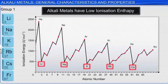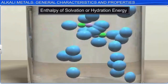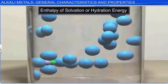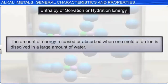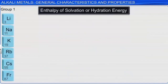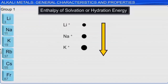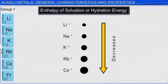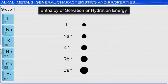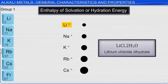Enthalpy of solvation, or hydration energy, is the amount of energy released or absorbed when one mole of an ion is dissolved in a large amount of water. In general, as ionic radii get larger, hydration energy decreases. So the enthalpy of hydration decreases from lithium to cesium. One result is that lithium salts, unlike the salts of the other alkali metals, often form hydrates such as lithium chloride dihydrate.